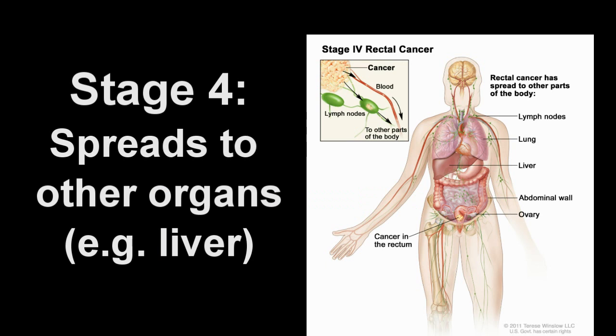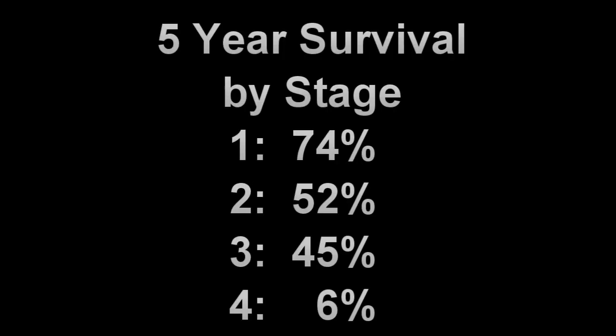In stage 4 cancer, the cancer has spread to other organs such as the liver. The staging of rectal cancer is important since the prognosis of the affected individual is highly dependent on the stage. For example, patients diagnosed with stage 1 rectal cancer have an overall 5-year survival rate of 74%, while those diagnosed with stage 4 cancer can only expect 6% survival at 5 years.